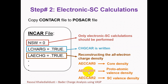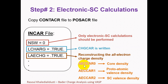The first is the core charge density, which will be written to AECCAR0. The second is the proto-atomic valence charge density, or overlapping atomic charge densities, which will be written to AECCAR1. The last one is the self-consistent valence charge density, which will be written to AECCAR2. The first two files, AECCAR0 and AECCAR1, are written at the start of the run, while AECCAR2 is written at the end after self-consistency has been reached.